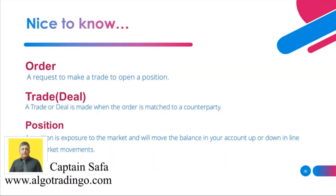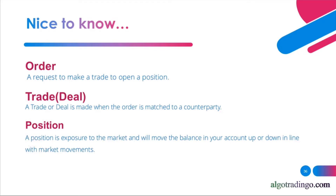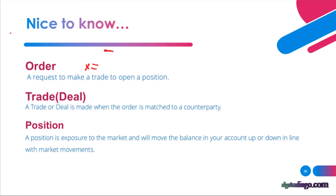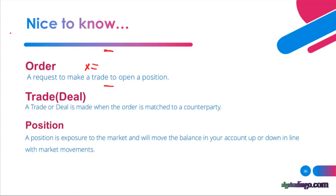Hello traders, Captain Safa here from Algo Tradingo. In this video we want to speak about order, deal, and position, and the mechanism for running those items. An order is a request to your brokerage that you want to specify some place to enter into a position. You can use orders like buy stop, sell stop, buy limit, or sell limit, or different kinds of orders available in your platform.